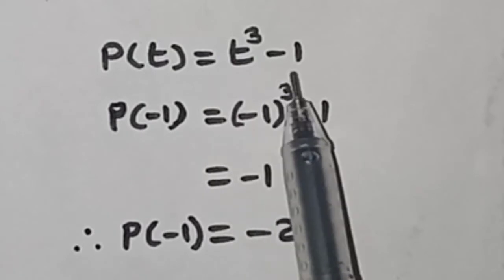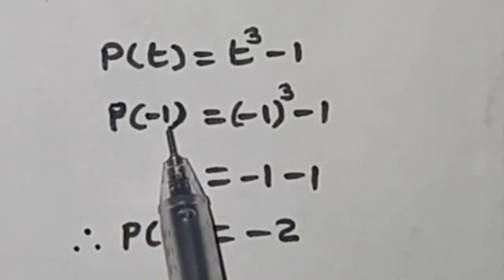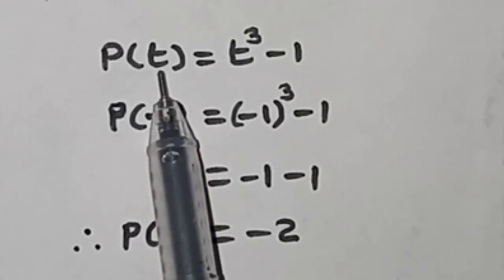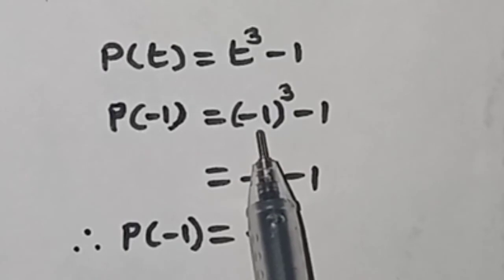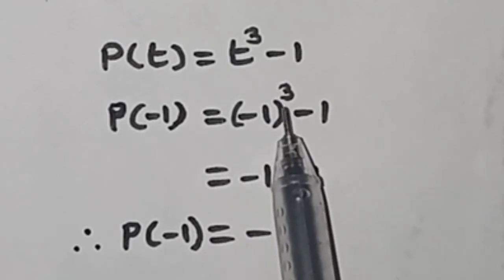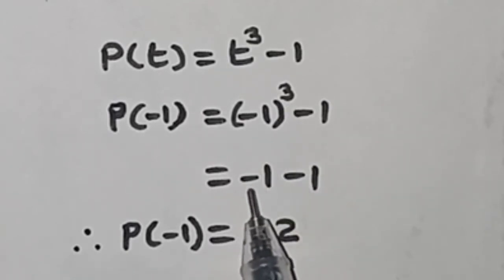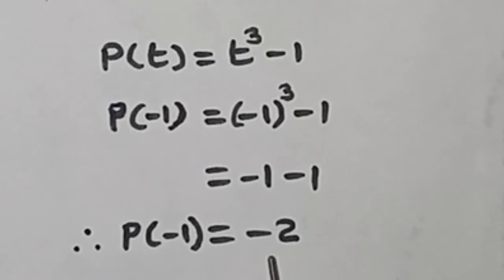P of t is given t cube minus 1. Find the value of P of minus 1. Instead of t here is minus 1, minus 1 all cube, minus 1 as it is. Minus 1 all cube is equal to minus 1 into minus 1 into minus 1. Here is the odd number, we will get minus. Minus 1 minus 1 is minus 2. Therefore, P of minus 1 is equal to minus 2.